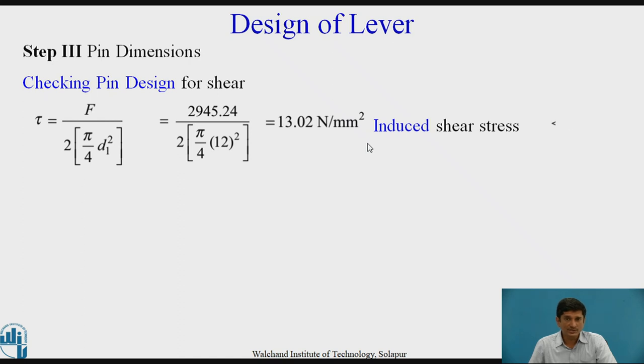We can solve and get that tau is 13.02 N per mm square. This is the induced shear stress which is well below the permissible shear stress. Therefore, the pin design is safe in shear. We have designed the pin for bearing consideration and we have proven that this pin is safe for shear.